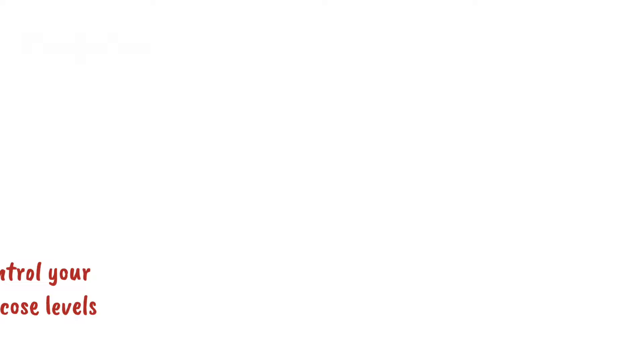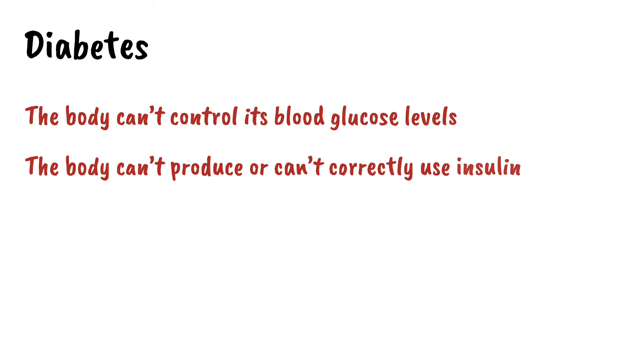There's a condition known as diabetes, where the body can't control its blood glucose levels. There are different types of diabetes, but basically it's a situation where the body either can't produce or can't correctly use insulin. The solution for many people in this situation is to take regular injections of insulin. The problem is, where do you get spare insulin?